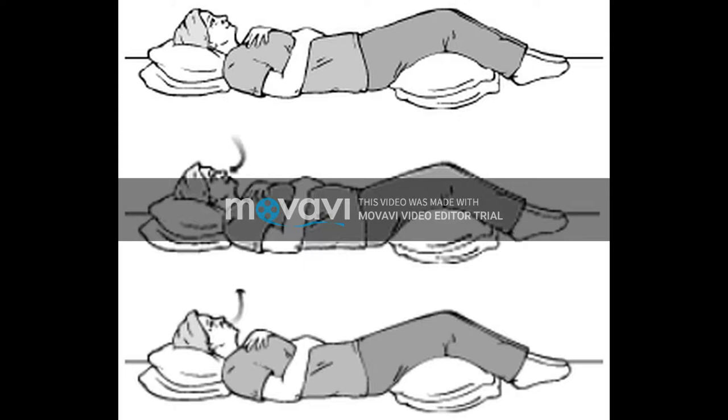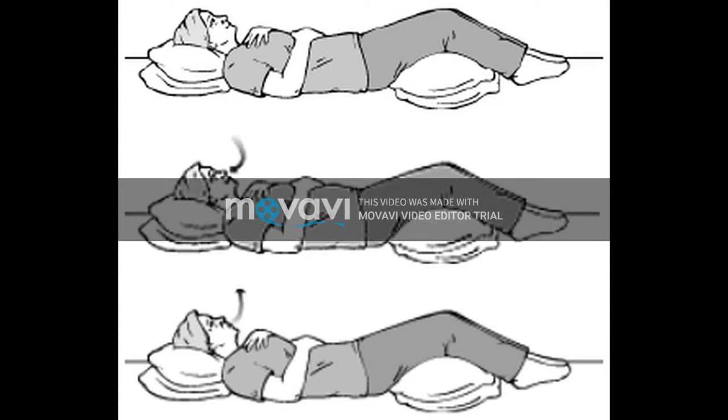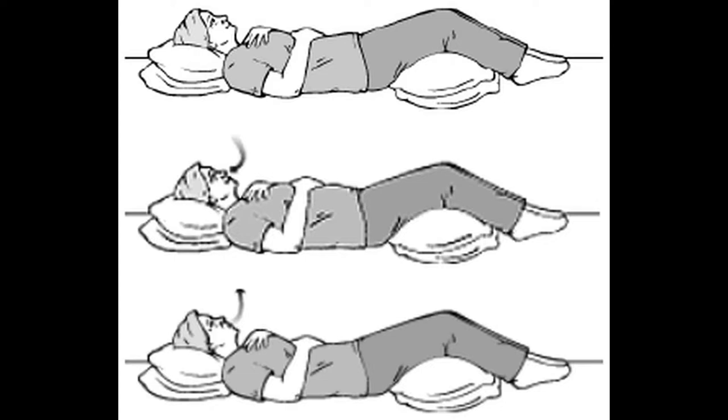Breathe in slowly through your nose so that your stomach moves out against your hand. The hand on your chest should remain as still as possible. Tighten your stomach muscles, letting them fall inward as you exhale through pursed lips. The hand on your upper chest must remain as still as possible.